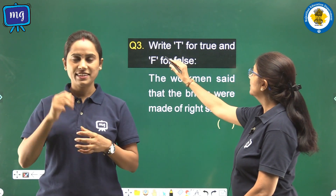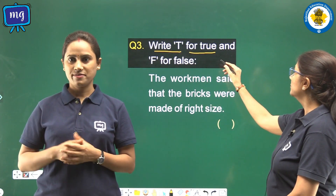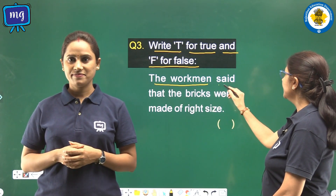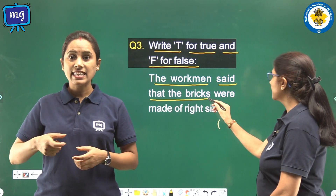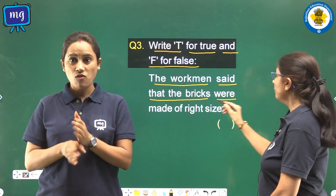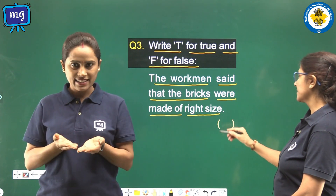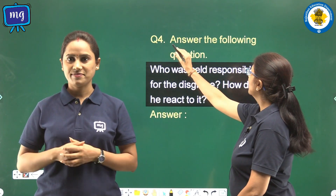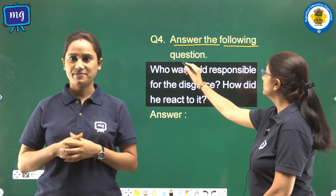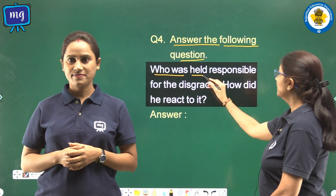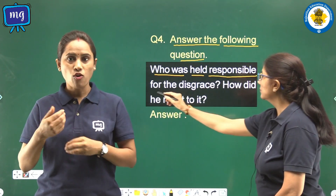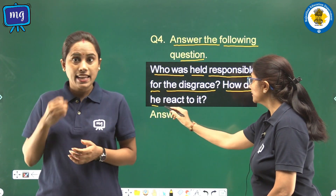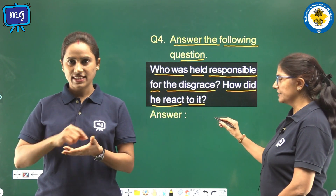Question number 3: write T for true and F for false. The workman said that the fabrics were made of the right size — write the answer in the bracket. Question number 4: answer the following question. Who was held responsible for the disgrace? How did he react to it? Write the answer yourself.